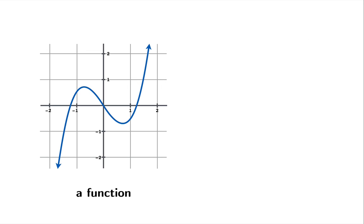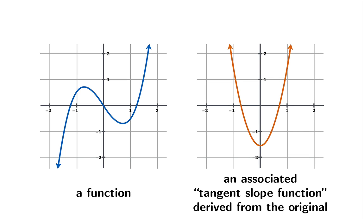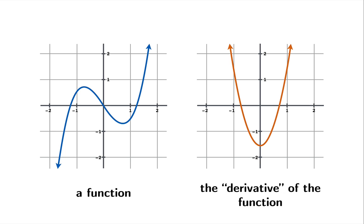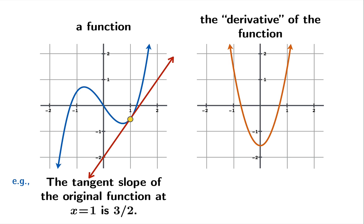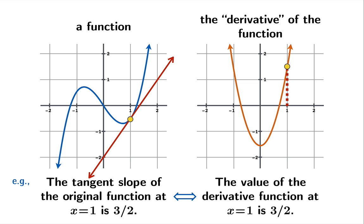This idea of a derivative is: given an original function, there's an associated tangent slope function derived from the original function, or what we call the derivative of the function. To look at an example, suppose the tangent slope of the original function at the argument x equals 1 happens to be 3/2. That would be encoded by the statement: the value of the derivative function at x equals 1 is 3/2. That's what the derivative does - it's a tangent slope function for the original function from which it is derived.